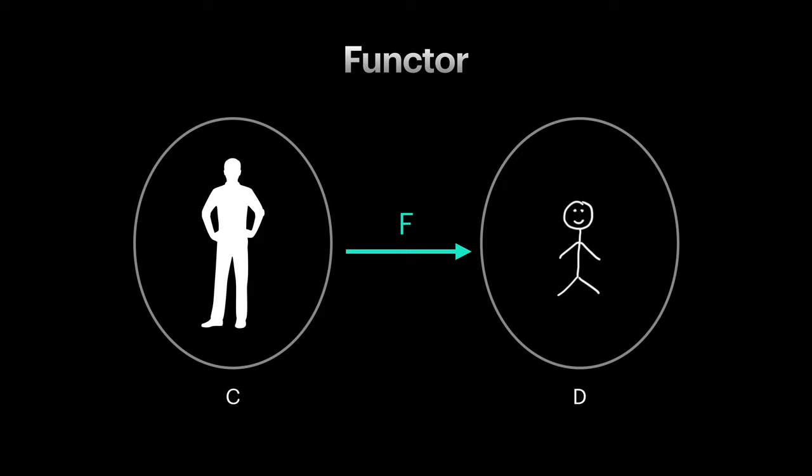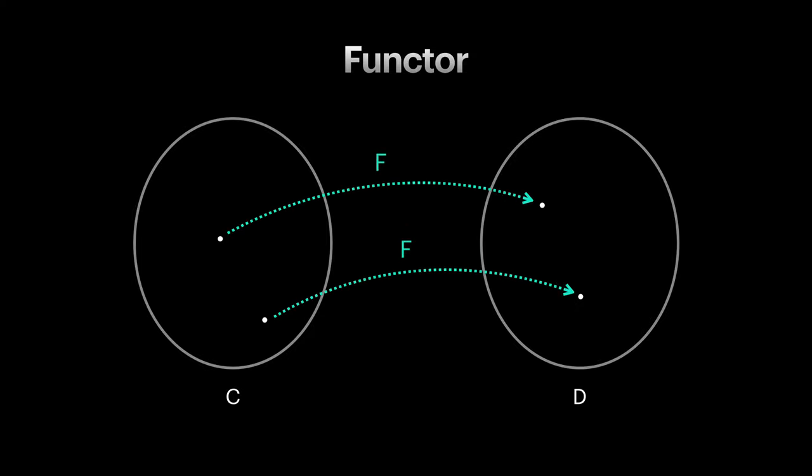So how can we define this mapping? For a starter, the first idea comes to mind is to map objects. So now object A in category C is mapped by F to F of A in category D. Same for objects B and FB.